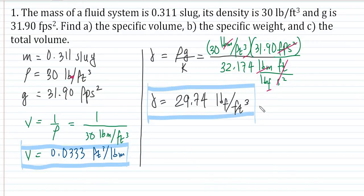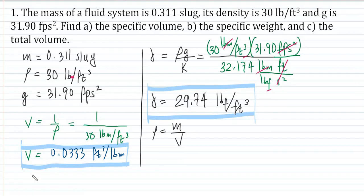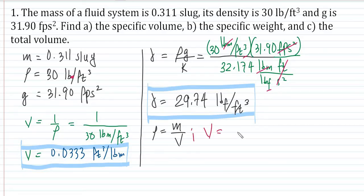We're done with letter B. Letter C: what is the total volume? We derive that from density: density equals mass over volume, so volume equals mass over density. Note the difference — specific volume has symbol lowercase v with units cubic feet per pound mass, while total volume has symbol capital V in just cubic feet. We are given the density, so we can derive the volume.